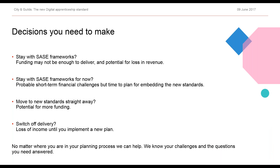Some of the decisions you'll need to start thinking about: you could stay with the SACE frameworks — funding is still available, but a significant disadvantage is the relatively inferior amount of funding. You may choose to stay with them for now and plan a short-term transition to the new standards. Or, if you change to standards straight away, you'll benefit from the advantageous funding available. Alternatively, you may take your time on longer-term planning, though you risk losing income from having no provision at all.